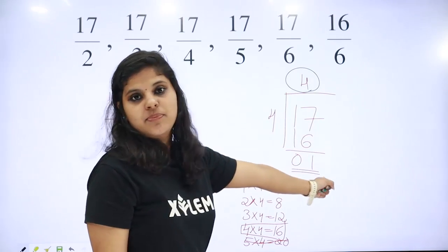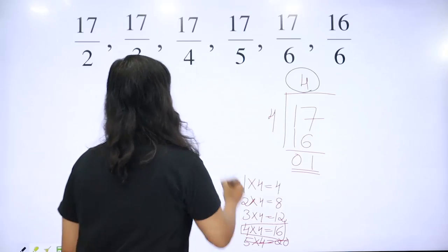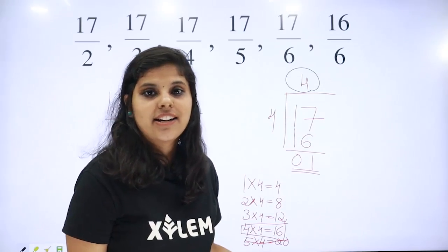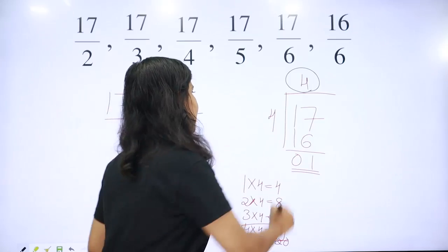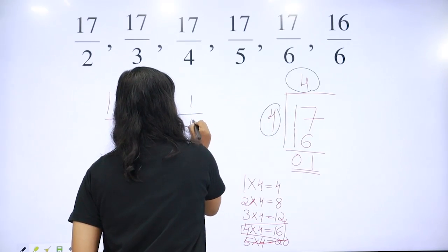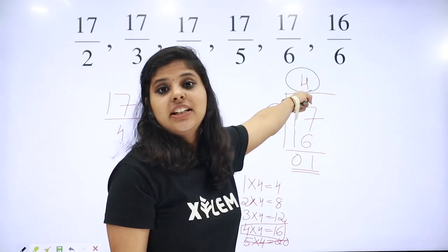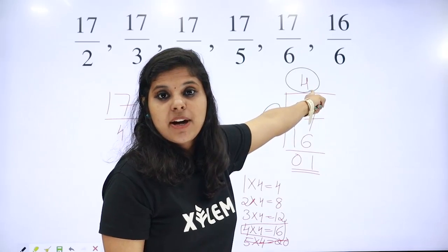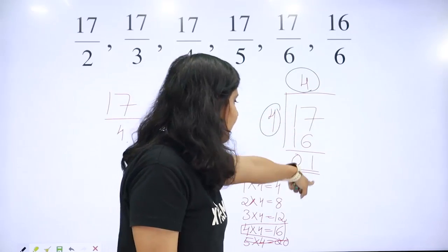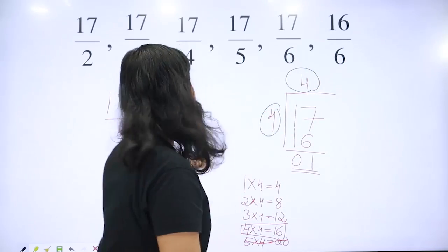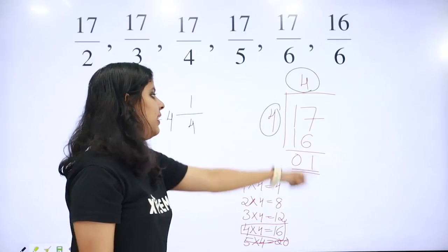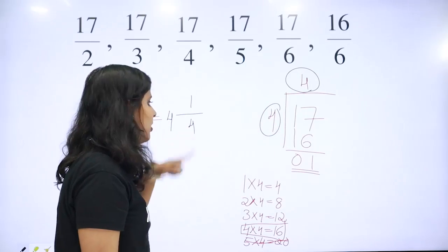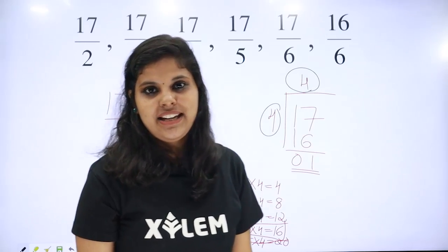And the remainder — if you have a remainder, the fraction is written over 4. The quotient is 4 and the remainder is 1, so 17 by 4 equals 4 and 1 over 4. The fraction part is 1/4. Is it clear? Yes.